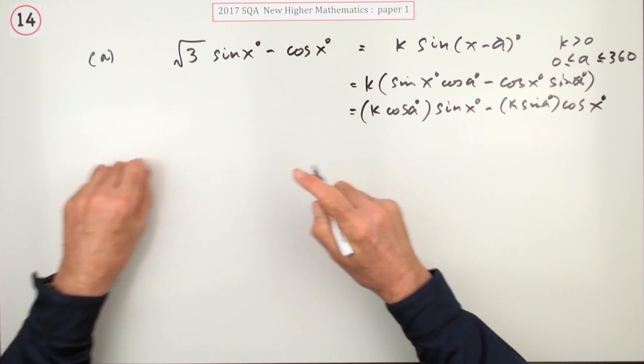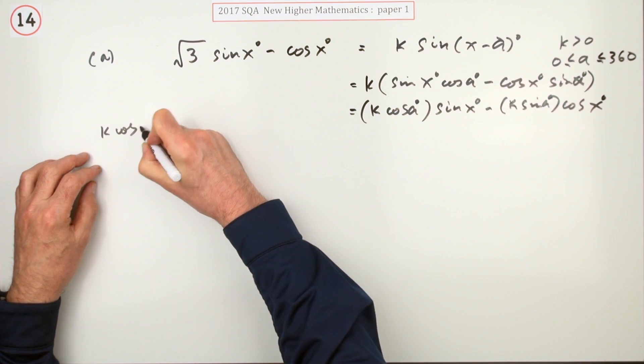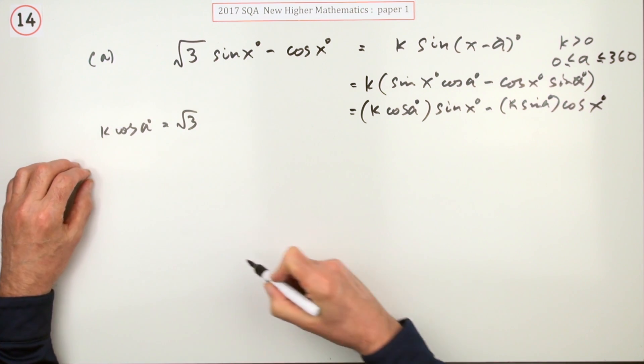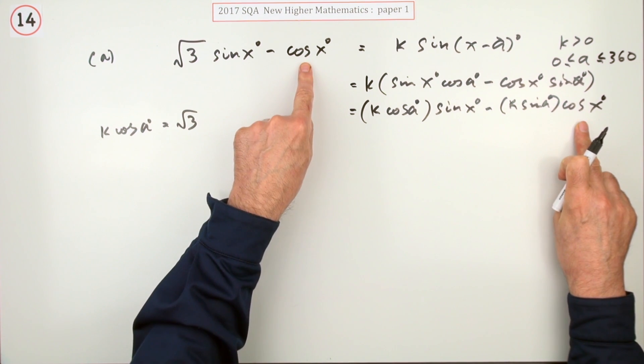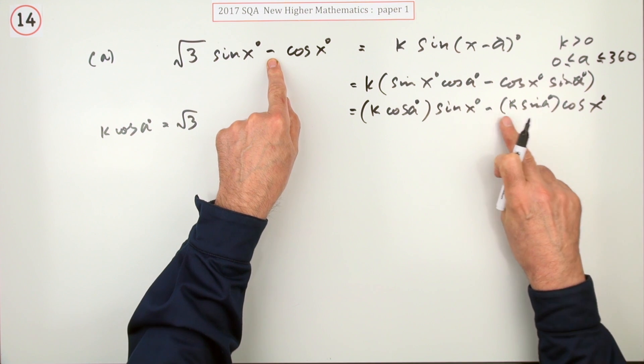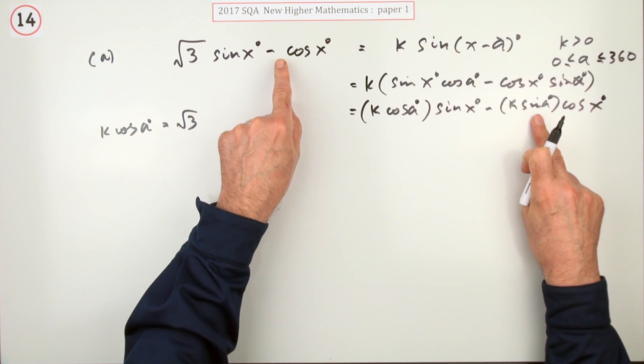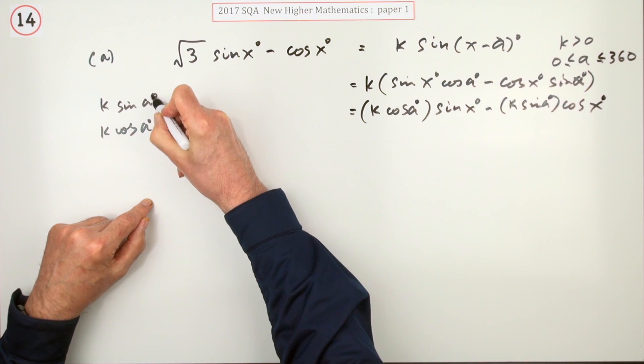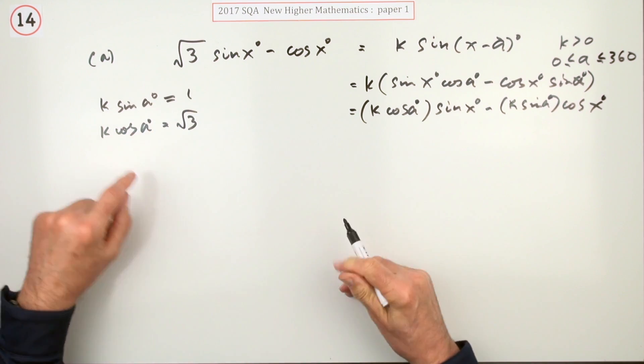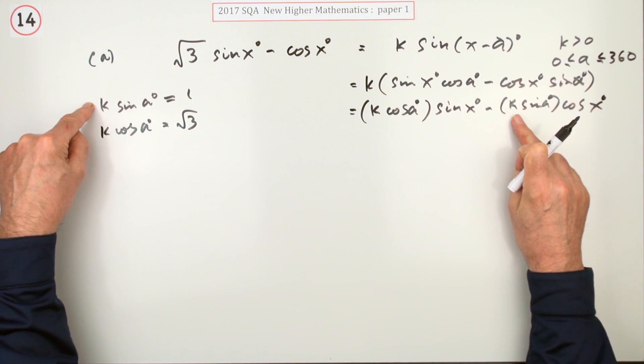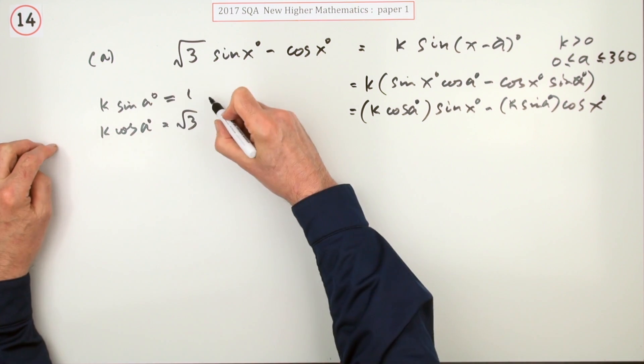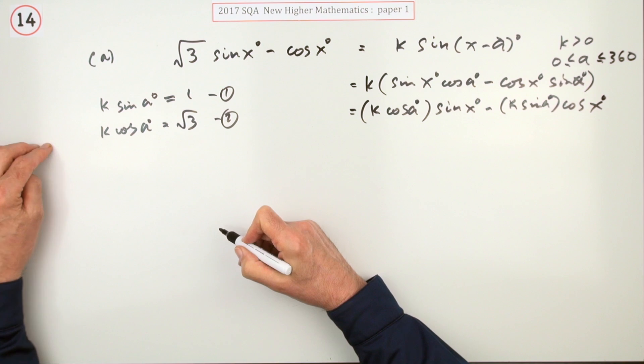So comparing them side for side, the coefficient of sine x should be root 3. So k cos a is root 3, k cos a equals root 3. And the coefficient of cos x, which is negative 1, is negative k sin a, means k sin a is 1. I'm going to put that on top. K sin a is 1, or you could have said negative k sin a is negative 1, and then the negatives would have cancelled.